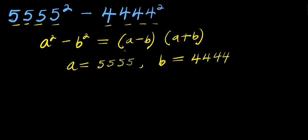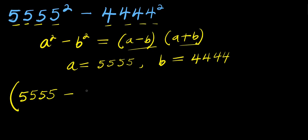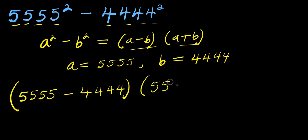So we are going to insert everything right here. 5555 is our a, minus 4444 is our b, times 5555 plus 4444.